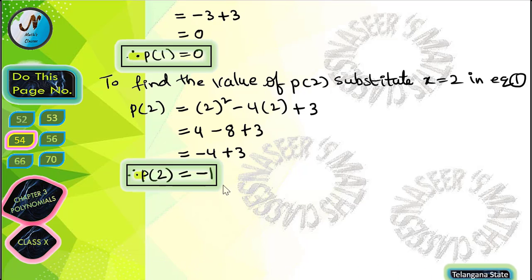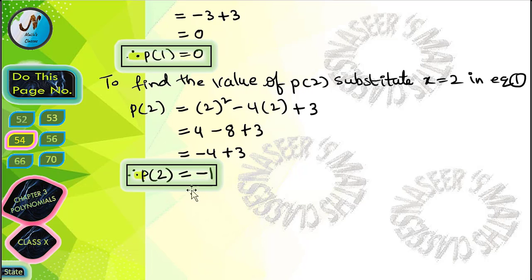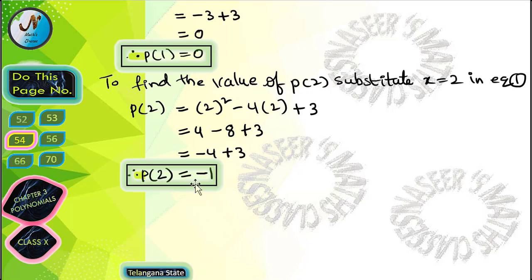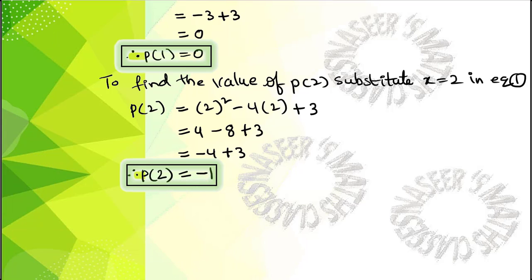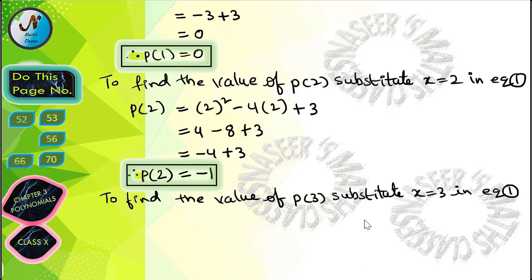After simplification, 4 - 8 = -4, and -4 + 3 = -1. Therefore p(2) = -1.